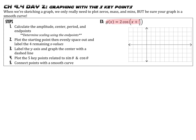G of x is equal to 2 times cosine of the quantity x plus pi over 2. Let's find the key information. The amplitude is the absolute value of A, and in this case A is 2, so the amplitude is 2. The center is y equals the vertical translation; since there is no vertical translation, the center is y equals 0. The period is 2 pi divided by B, and since there's an invisible 1 in front of x, the period is 2 pi divided by 1, or just 2 pi.